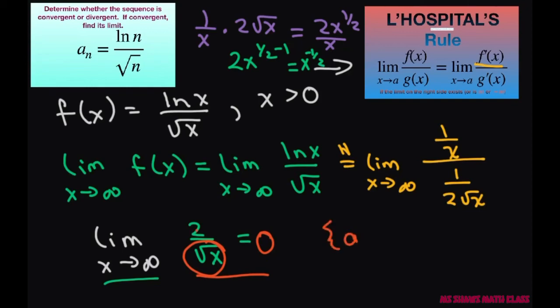So our sequence A sub n converges, and you can write the limit as n approaches infinity of A sub n equals zero.